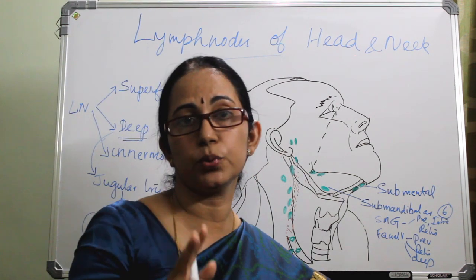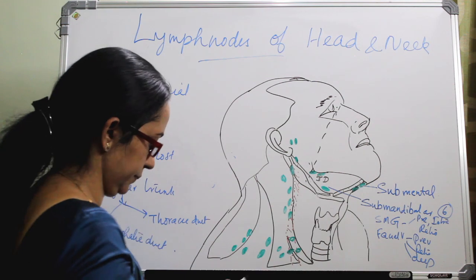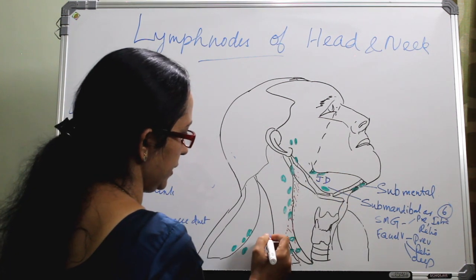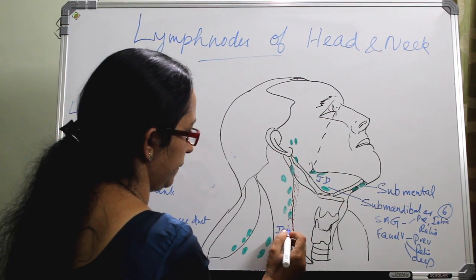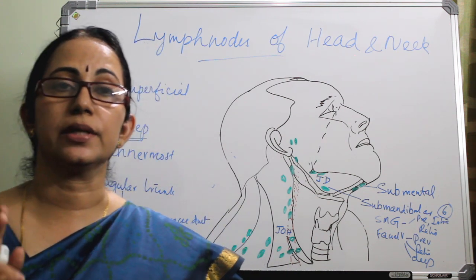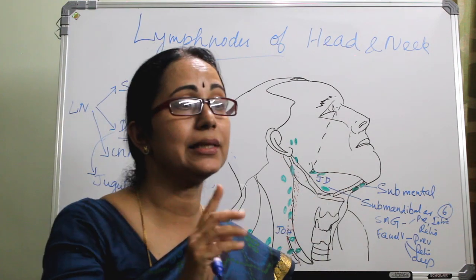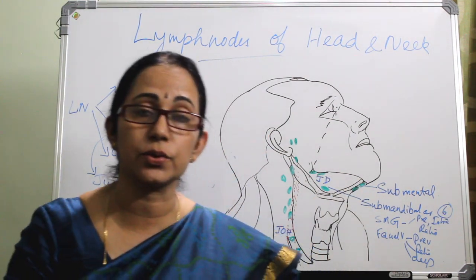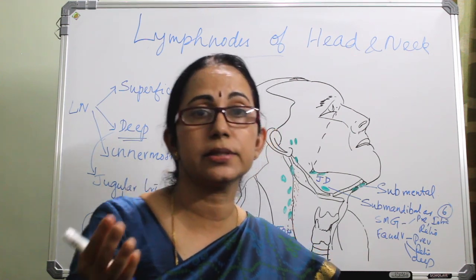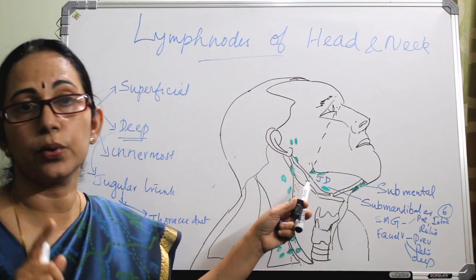In relation to the upper deep cervical nodes, two important lymph nodes are the jugulodigastric and the jugulo-omohyoid. The jugulodigastric lymph node is the node of the tonsil — you will see enlarged jugulodigastric lymph node in all cases of chronic tonsillitis. It is situated just below and behind the angle of the mandible and is part of the upper deep cervical group.